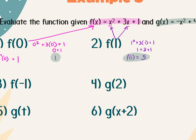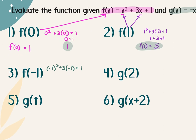Number 3: f of negative 1. Everywhere there's an x, we plug in negative 1 in parentheses. So this would be negative 1 in parentheses squared plus 3 times negative 1 plus 1. That is important because negative one in parentheses squared is different from negative one squared. I get 1 minus 3 plus 1, which is negative 2 plus 1, which is negative 1. So f of negative 1 is negative 1.